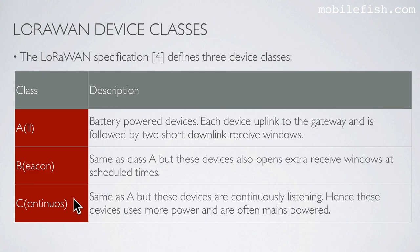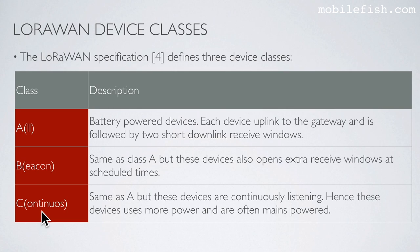Class C devices use more power and are often mains-powered. The reason Class A is called ALL is because all device classes, B and C, can also behave like a Class A device. The reason Class B is called BEACON is because beacons are used, which I will explain later on. The reason Class C is called CONTINUOUS is because these devices are continuously listening.